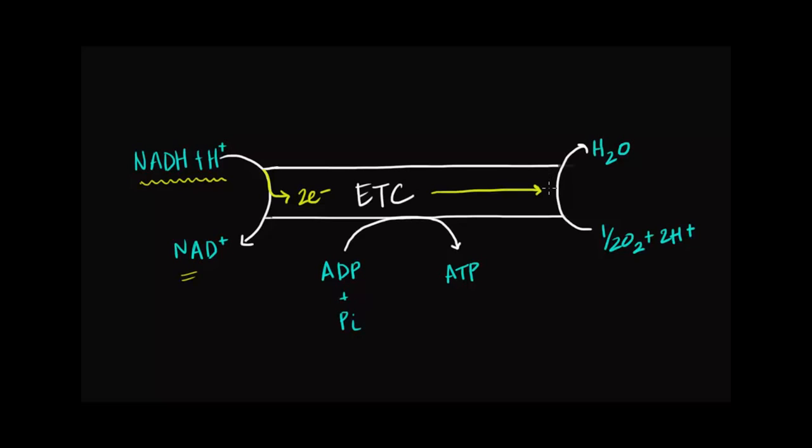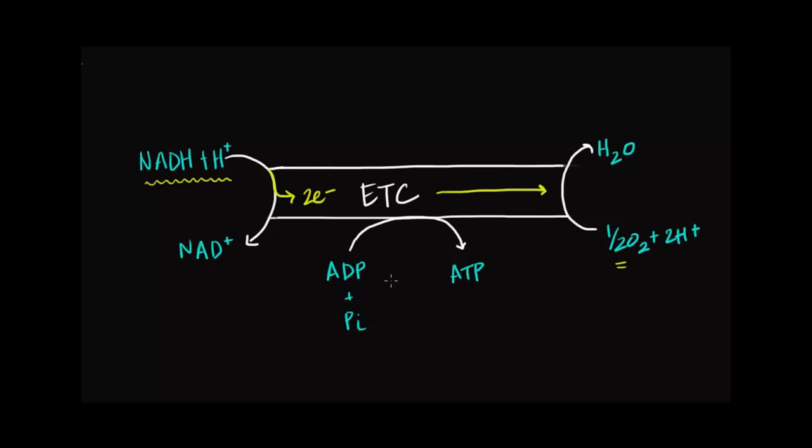And then finally, the electrons must have somewhere to go, and they end up reducing oxygen. It's kind of funky to think about two electrons reducing half an oxygen, but this is just so that the stoichiometry works out. You can see here that if we were to reduce one molecule of oxygen, we'd need four electrons. But in any case, it reduces oxygen and it combines with some free protons to produce some water.